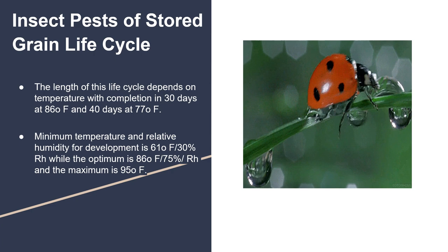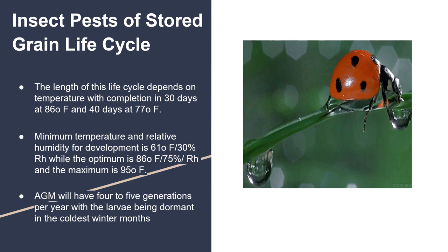AGM will have four to five generations per year, with the larvae being dormant in the coldest winter months.